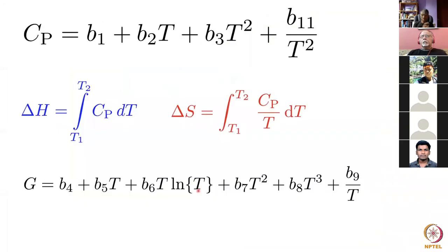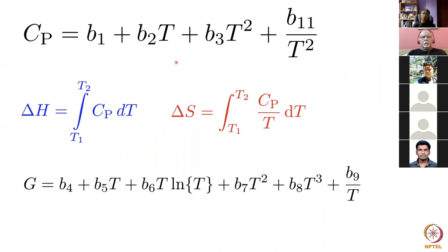The fundamental property we need from measurement is the heat capacity. In these generalized models we express the heat capacity as an empirical polynomial. This polynomial is found to work extremely well in representing measured heat capacity data. If it doesn't work over the entire temperature range, in a computer you can stitch it with another such equation working in a different temperature domain.